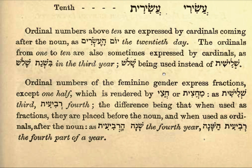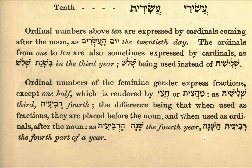The ordinals from one to ten are also sometimes expressed by cardinals, as in bishnat shalosh, meaning 'in the third year,' with shalosh being used instead of shlishit. The difference is that when used as fractions they are placed before the noun, and when used as ordinals after the noun, as in Revi'it hashanah — the fourth part of a year.